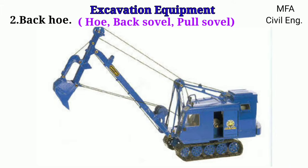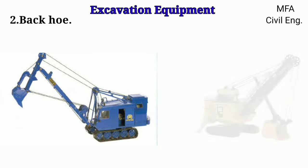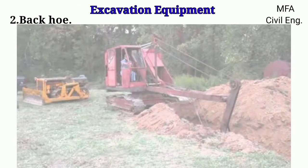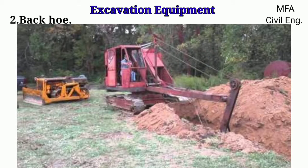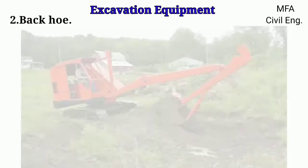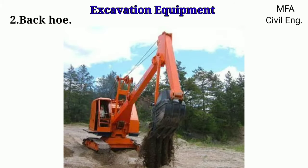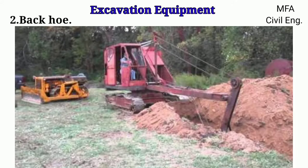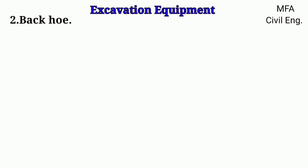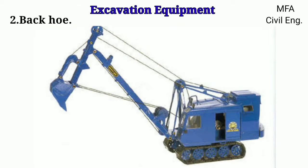Backhoe is also termed as hoe, back shovel, and pull shovel. It is an excavating machine of the power shovel group. It is generally used to excavate below the natural surface on which it rests. Backhoes are used to excavate trenches, pits of the basement, and generally grading work which requires precise control of the depth.